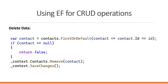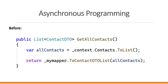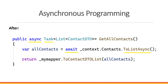For delete, we first get the contact by ID. If it's null we return false to the controller; if it's not null we use the Remove method in memory, then SaveChanges to make the change in the database. Finally, we'll convert our synchronous methods to asynchronous ones using async/await keywords, change ToList to ToListAsync, and return a Task of the list instead of just the list.